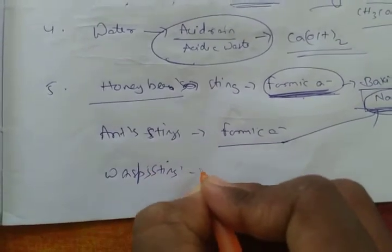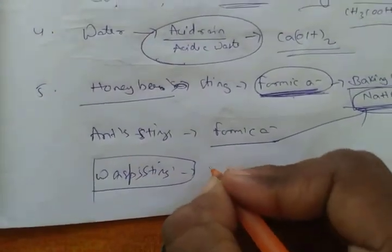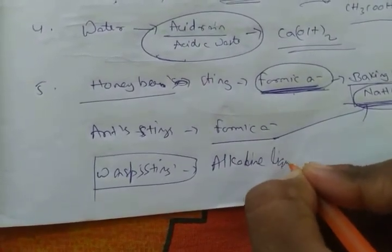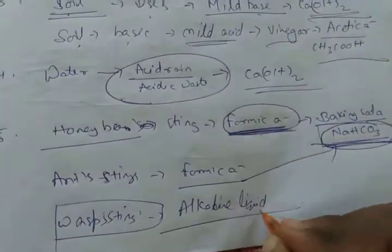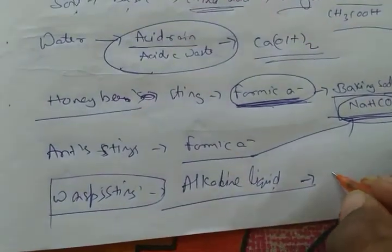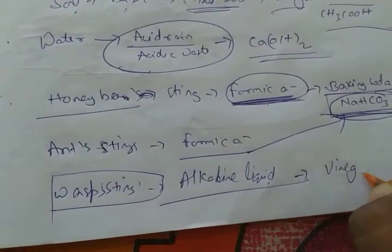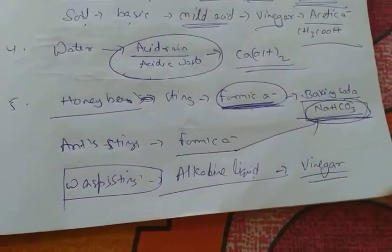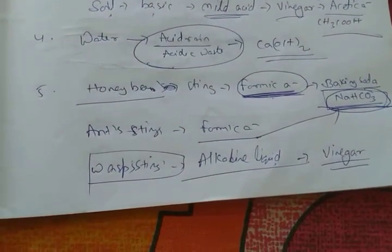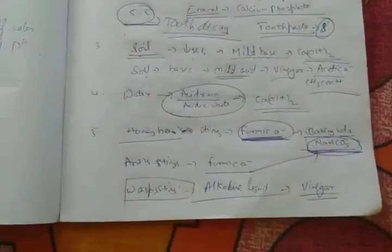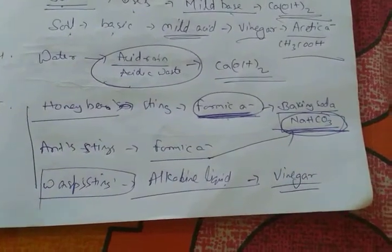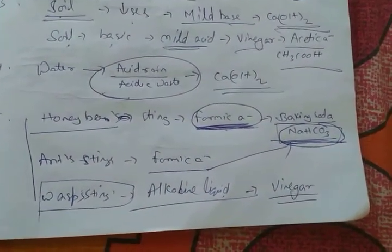Wasp sting contains alkaline liquid - it doesn't contain acid but contains base, which also causes severe pain. It can be neutralized by using vinegar. Here we see that animals use acids or bases as chemical warfare for their self-defense.